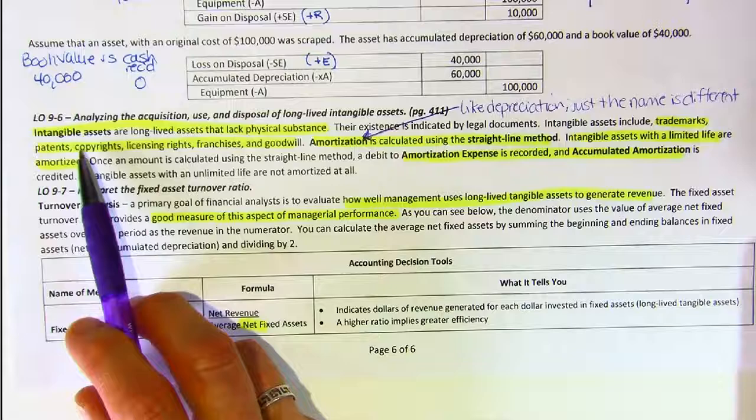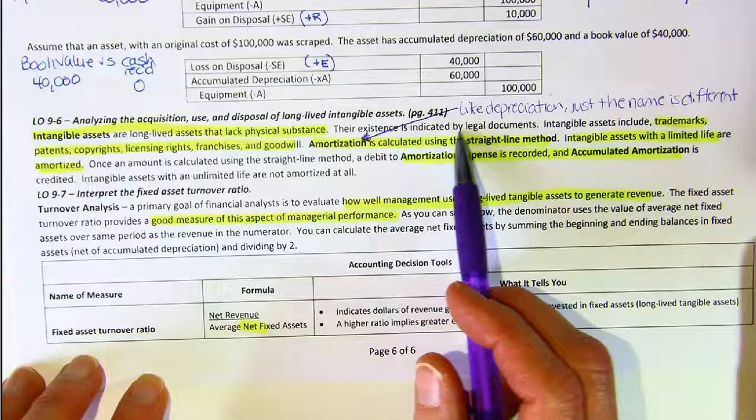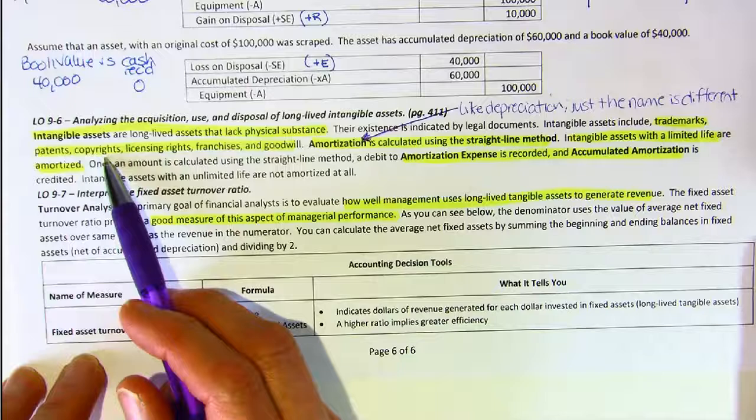They're long-lived assets, which means we expect to use them longer than a year, that lack physical substance. Their existence is indicated by legal documents, and they include such items as trademarks, patents, copyrights, and such.